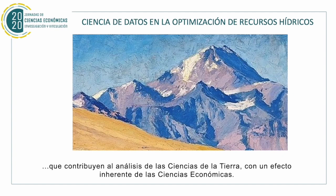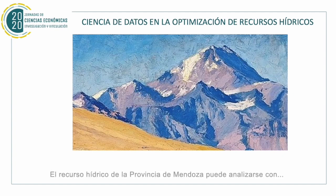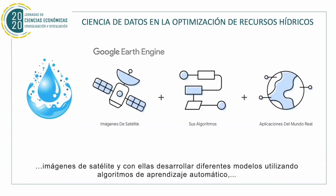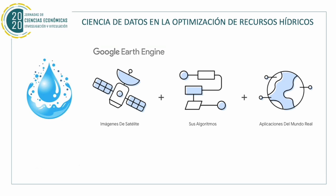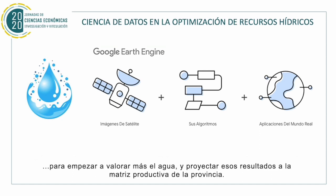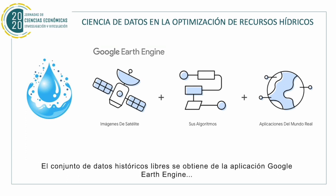The water resources of the province of Mendoza can be analyzed with satellite images, and with them develop different models using a learning algorithm, achieving precise information that contributes to decision making and supports valuable knowledge to start to evaluate the water more and project those results on productive metrics of the province.